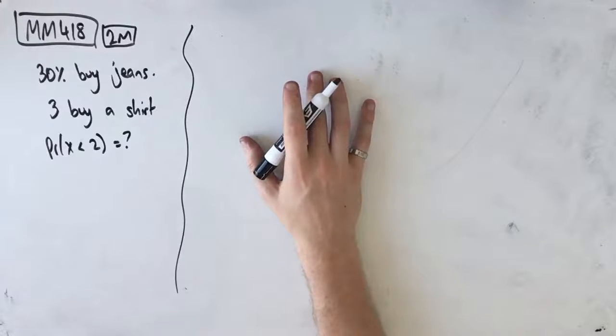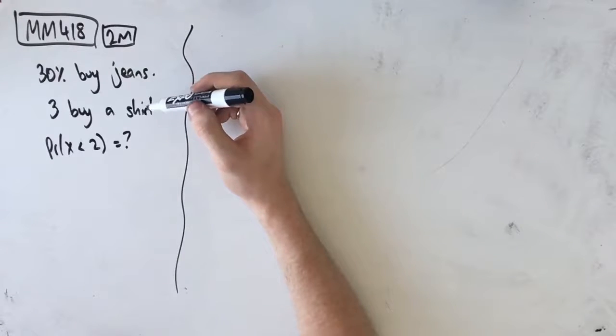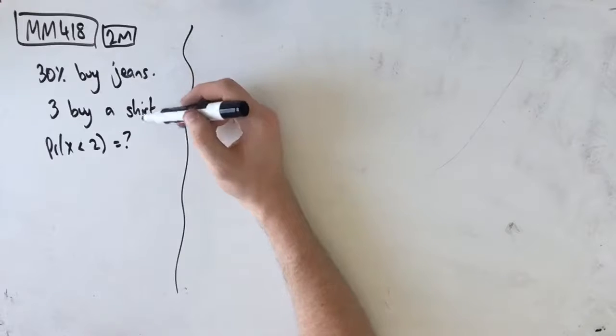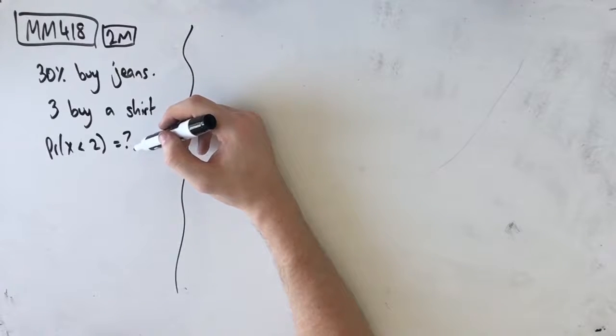Hey guys, welcome to question MM418 of the Maths Methods Fortify study guide. It is known that 30% of the customers who buy a shirt in a particular store will also buy a pair of jeans. If three customers buy a shirt, what is the probability that less than two of these customers also buy jeans?